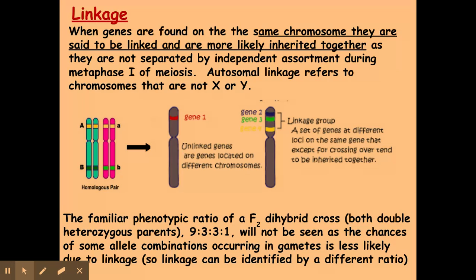Due to being more likely to inherit genes that are most closely together on a chromosome, it means you're less likely to get the 9:3:3:1 ratio. You're not expected to know all the different ratios that could come about through linkage, but you are expected to know that autosomal linkage can impact on the 9:3:3:1 ratio that you'd likely see in a cross between two double heterozygous parents.